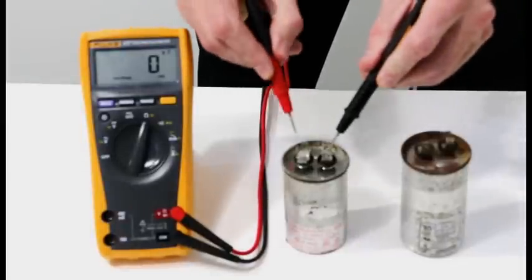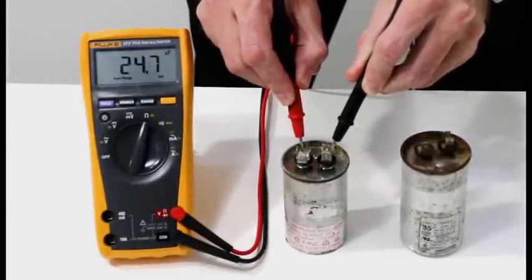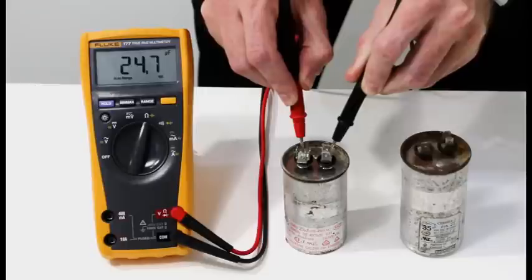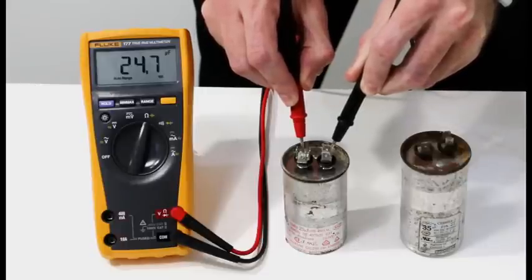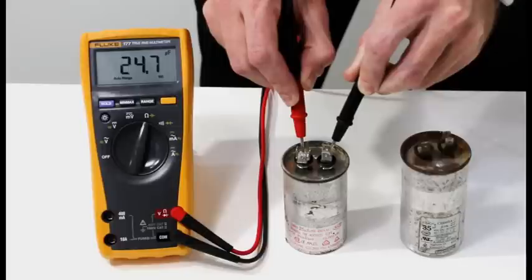I then take my test leads and put them on the ends of my capacitor. This one I'm measuring 24.7. This is my 25 microfarad capacitor. So this one to me is working perfectly. It's within the 5% tolerance specification.